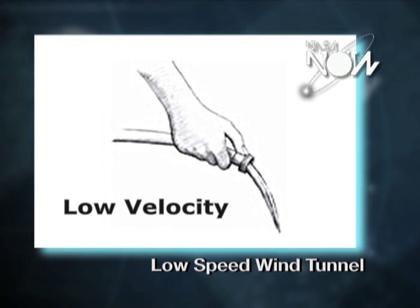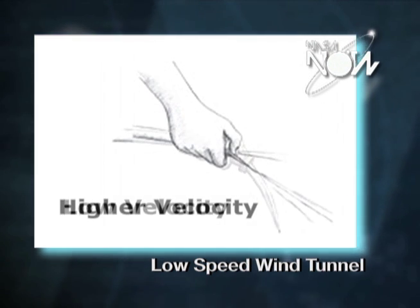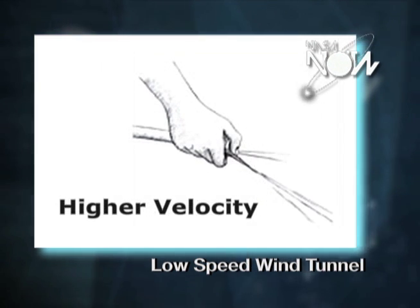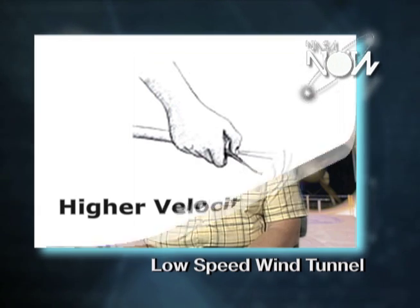You can think of taking your garden hose, turning the flow on, then putting your thumb over the end. What you've done is restricted the end, and that makes the water come out faster. We do exactly the same thing with the air.